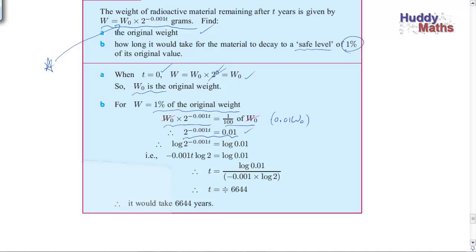We're solving an exponential equation where the unknown is in the exponent. The method: write both sides as a power of the same base. Taking log of both sides, log of 0.001 raised to negative 0.001t means multiplying the powers together. Then dividing through by the two factors to isolate t — it's a linear equation at that point. Computing on the calculator gives approximately 6,644.